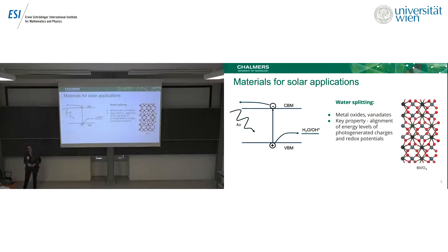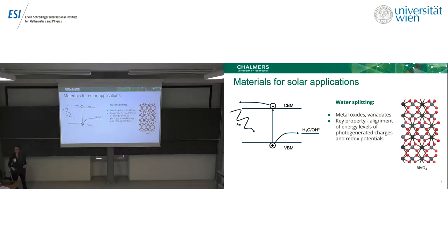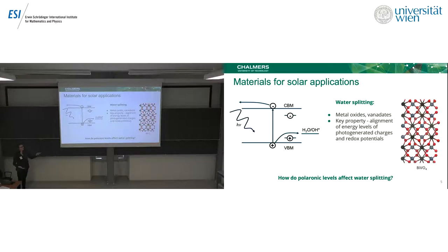For materials for water splitting, we are looking for photoanodes among metal oxides such as vanadates. What is important is that after absorbing light, we will have a hole and electron pair. We want the hole to jump into water and split it via the redox potential. It's interesting to think about how polarons affect this, because photo-generated charges in some metal oxides will not be delocalized — they will actually form polarons. So it's interesting to look at how the energy alignment will be affected by these additional energy levels.